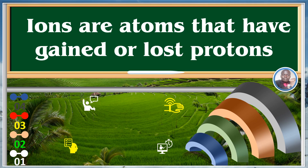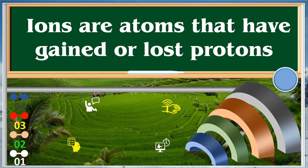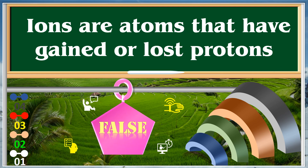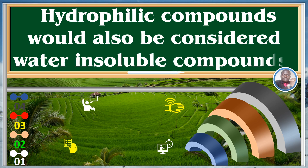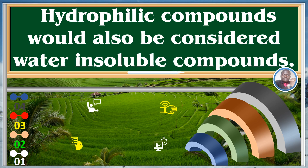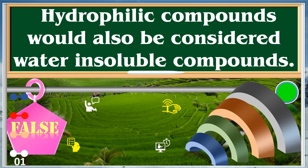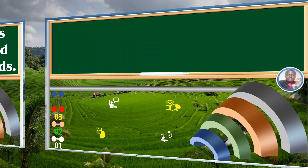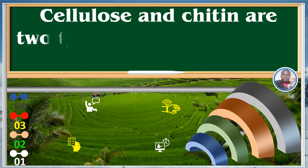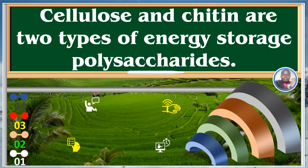Ions are atoms that have gained or lost protons. False. Hydrophilic compounds would also be considered water-insoluble compounds. False. Cellulose and chitin are two types of energized polysaccharides. False.